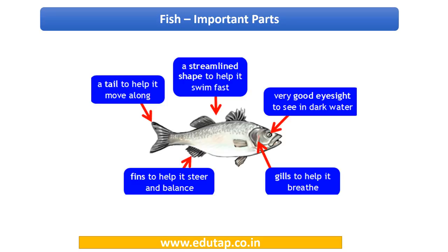The tail helps in motion or movement. The streamlined shape of the fish helps it to swim fast, just like boats have a streamlined shape. Fishes usually have good eyesight that helps them see in dark water. Gills are for breathing, as human beings have lungs. Fins also help the fish to steer and balance — balance is a very important function that fins perform.